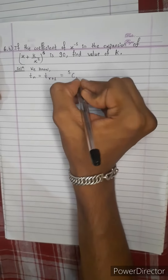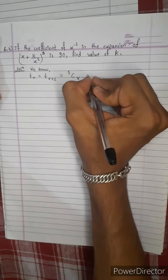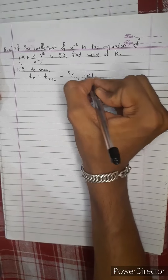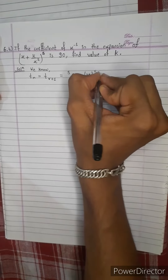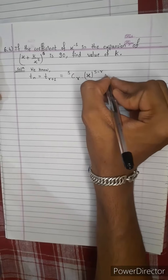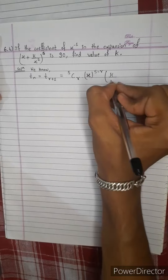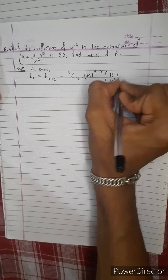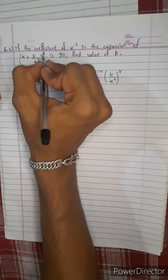n, c, r — a power n minus r, and then b power r. r is equal to n, and n is equal to 5.